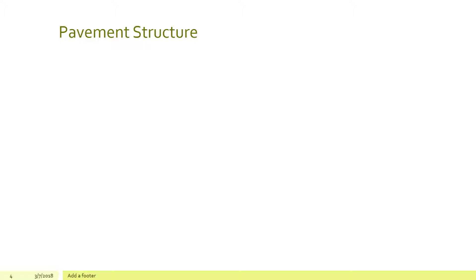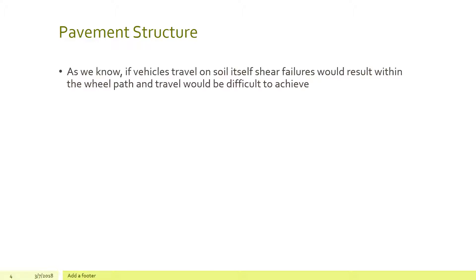If a vehicle travels on soil itself, shear failures would result within the wheel path and travel would be difficult. Many of us have seen in old films where Model Ts travel on unpaved roads with ruts created by wheel spacing. We want to eliminate this shear failure of the soils.